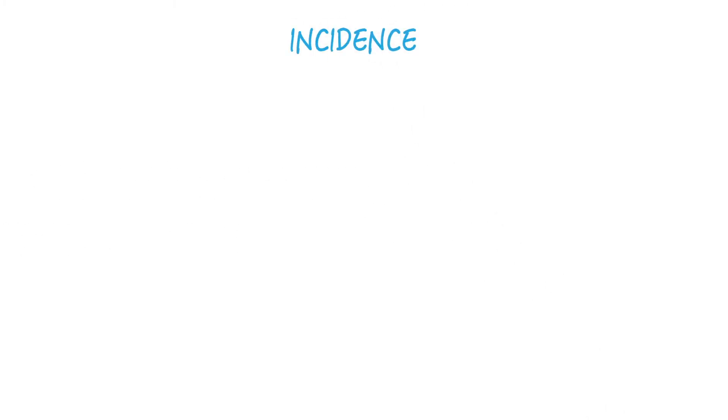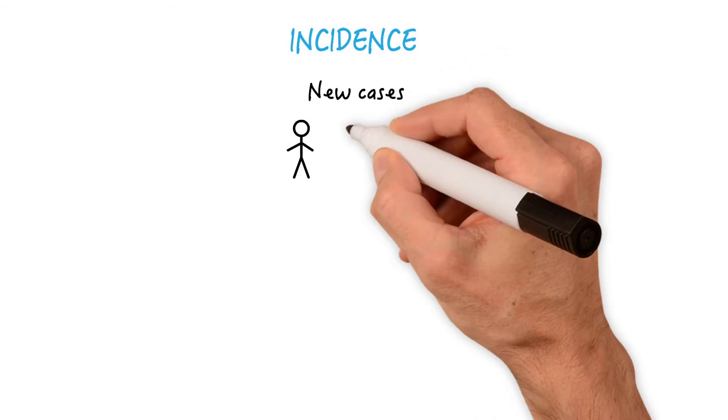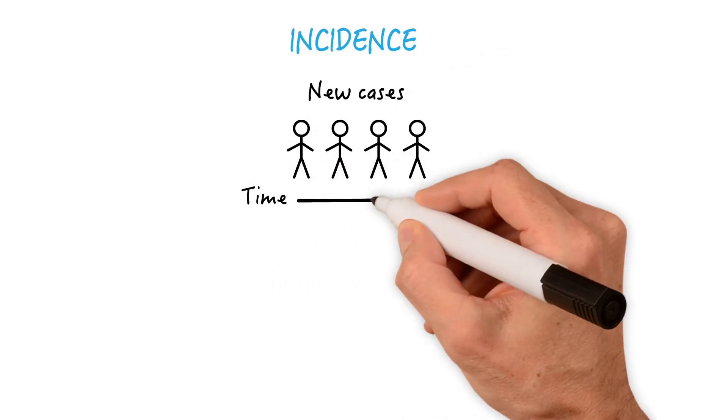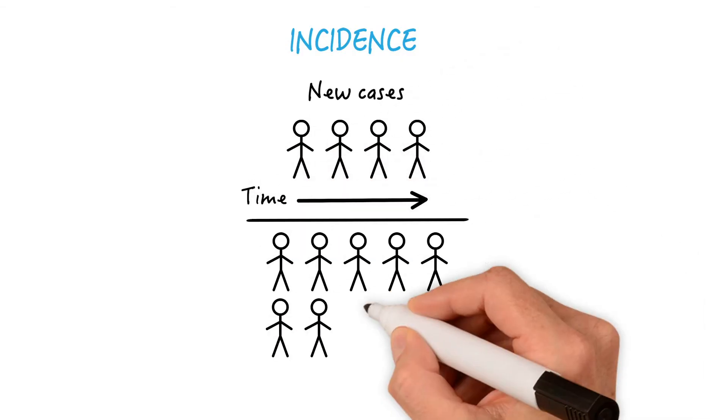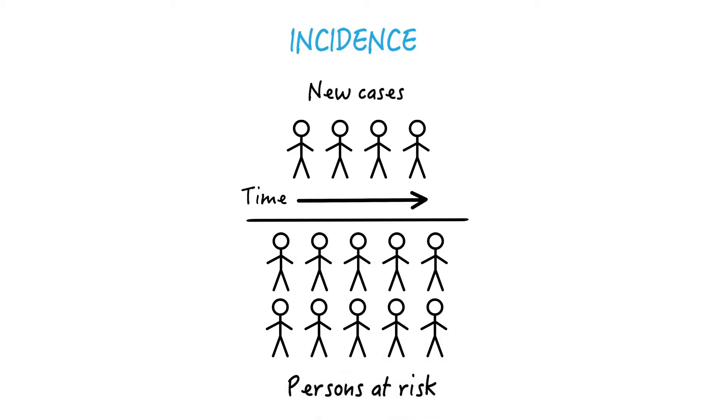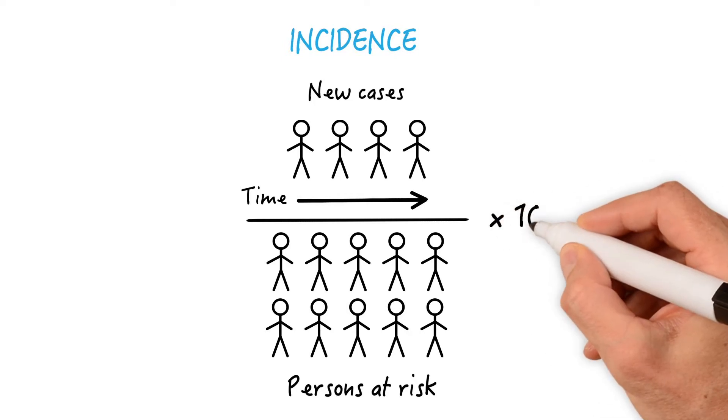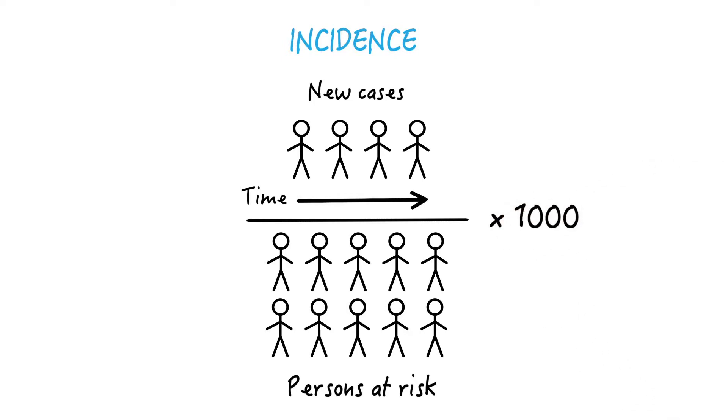Incidence is defined as the number of new cases of a disease during a specific time period divided by the number of persons at risk for the disease during that same time period. The resulting proportion can be multiplied by 1000 to get the number of new cases per 1000 population, or by 100 to get the number per 100 population.